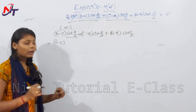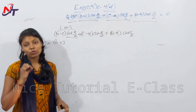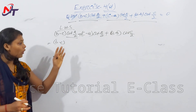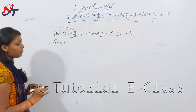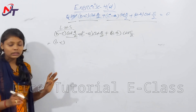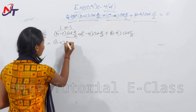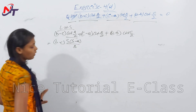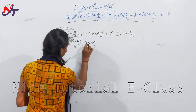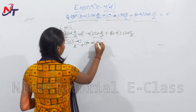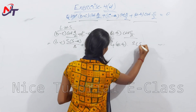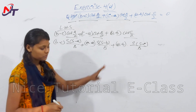cot(A/2) = s(s-a)/Δ. So tan(A/2) = √[s(s-a)]/Δ, which gives cot(A/2) = s(s-a)/Δ. Then cot(B/2) = s(s-b)/Δ, and cot(C/2) = s(s-c)/Δ.